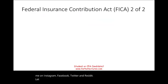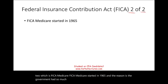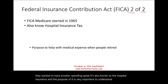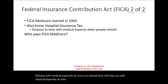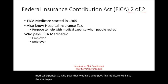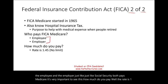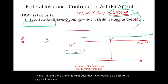FICA Medicare started in 1965, also known as hospital insurance. The purpose is to help retirees with medical expenses. Both the employee and the employer pay Medicare, just like Social Security. The rate is 1.45%, and there is no limit. Taking $2,500 × 1.45% gives us $36.25 — which matches the paycheck.